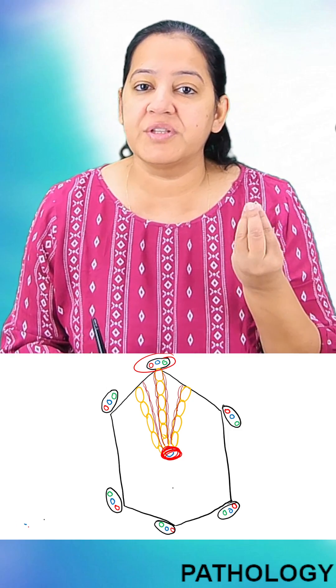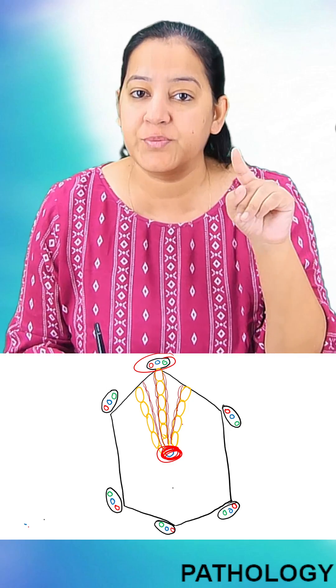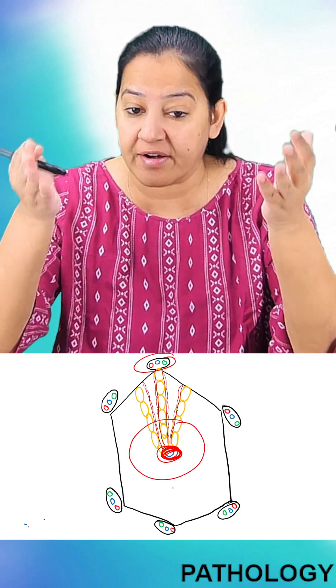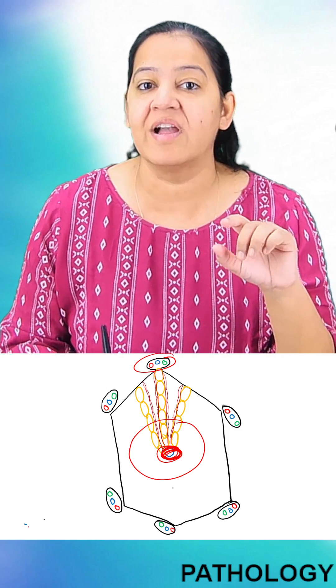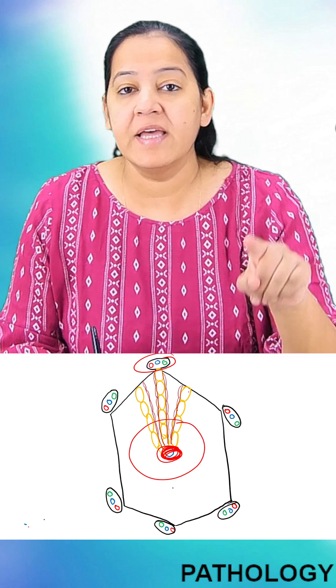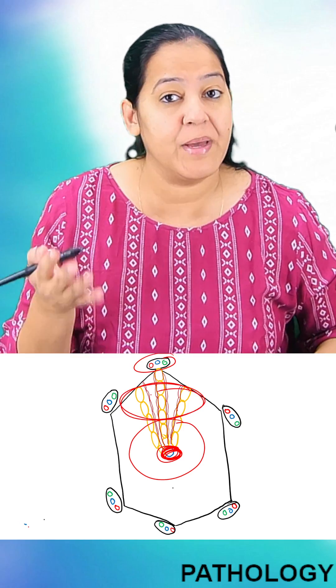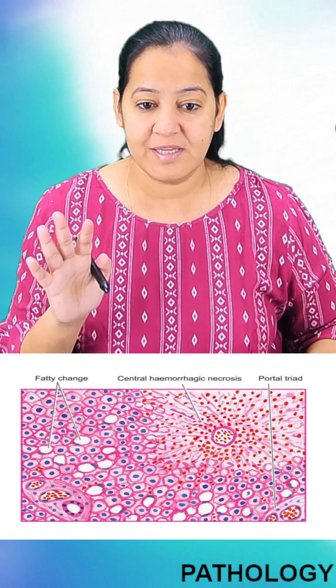Now in chronic venous congestion, the central vein gets ruptured. That's why the hepatocytes which are near the central vein, they undergo hemorrhagic necrosis and they appear red in color. And the peripheral hepatocytes, they have fatty change in them. That's why they appear yellow in color. So this is the appearance you can see.